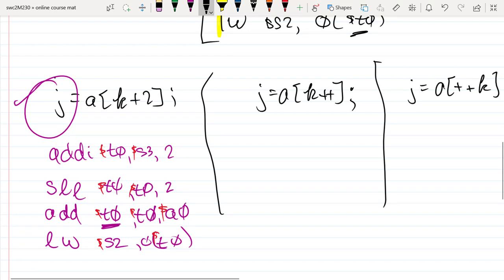j equals a sub k plus plus. So this here is equivalent to just simply using the value of k and then incrementing him, k equals k plus 1, or k plus plus, right afterwards. So really that's what I'm looking to do.